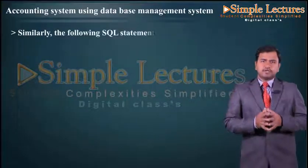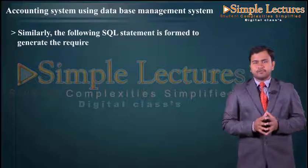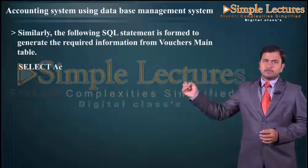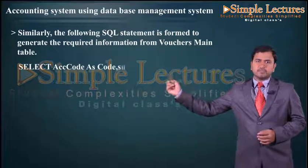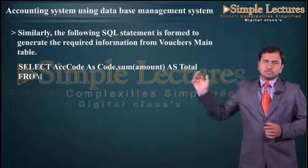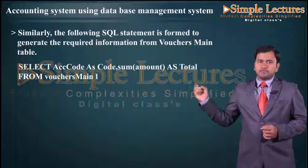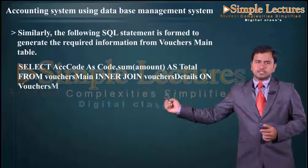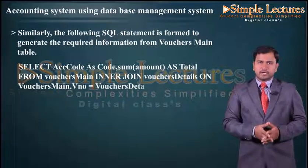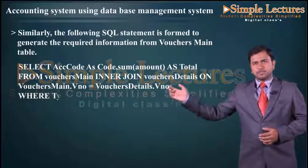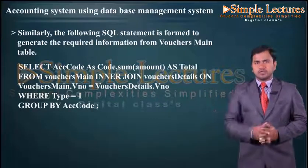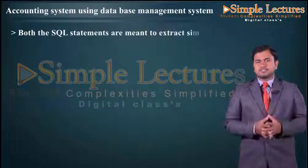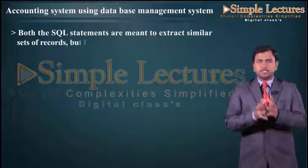Similarly, the following SQL statement is formed to generate the required information from the voucher_main table: SELECT account_code AS code, SUM(amount) AS total FROM voucher_main INNER JOIN voucher_details ON voucher_main.voucher_number = voucher_details.voucher_number WHERE type = 1 GROUP BY account_code. Both SQL statements extract similar sets of records but from two different sources.